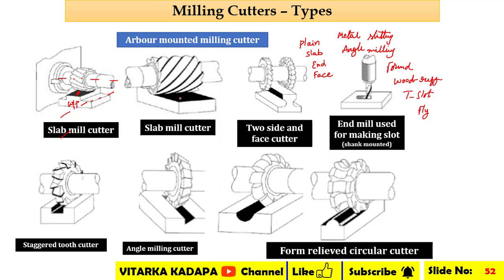This is a similar case of a slab mill cutter where the work piece width is more. This is a case where manufacturing of I-section beams or railway beams requires the side surfaces to be machined carefully — this is the option for a two-side cutter. This is a category of cutter called an end mill cutter, used for manufacturing a slot — for example, compound slide adjustments.